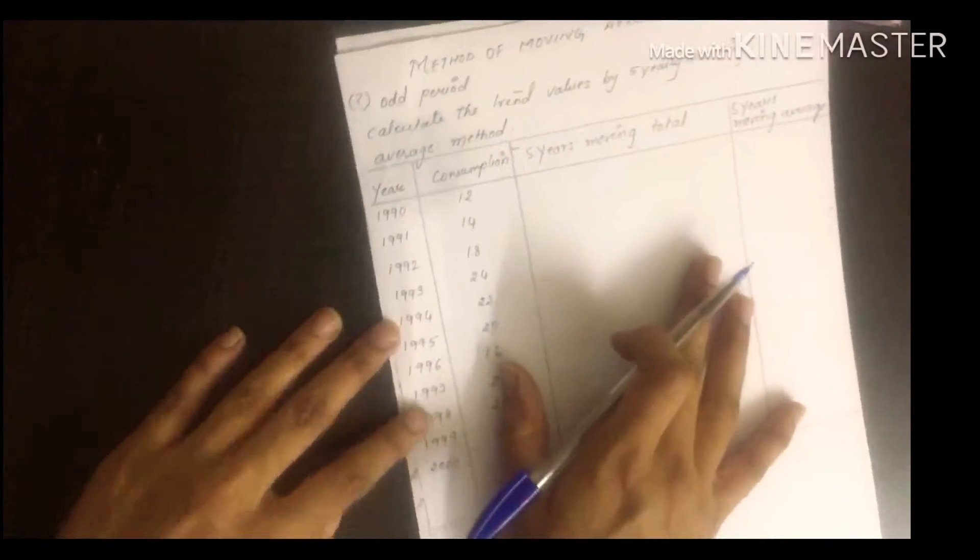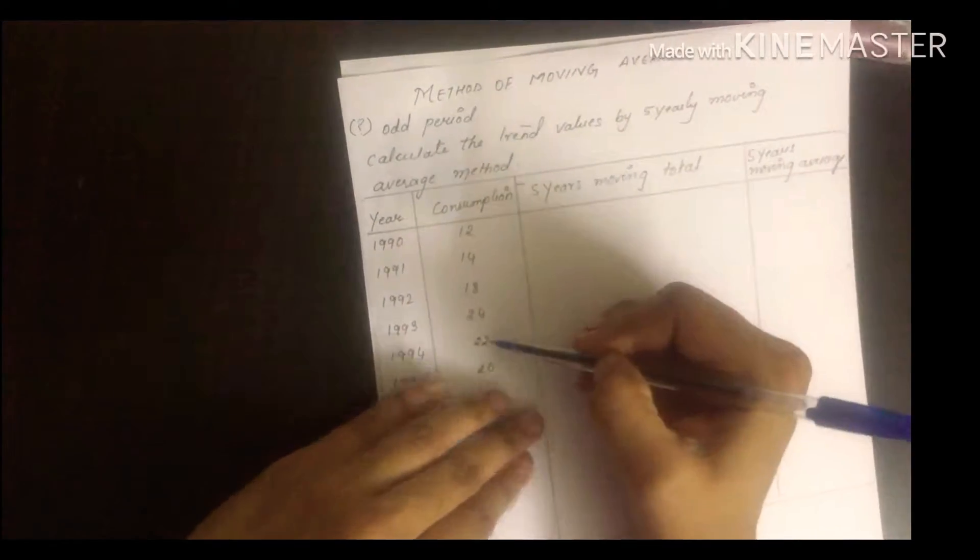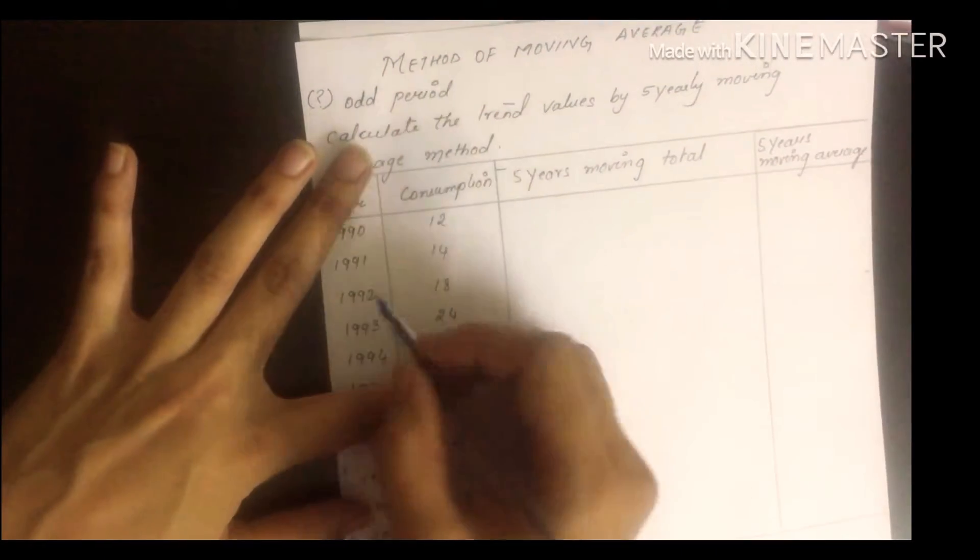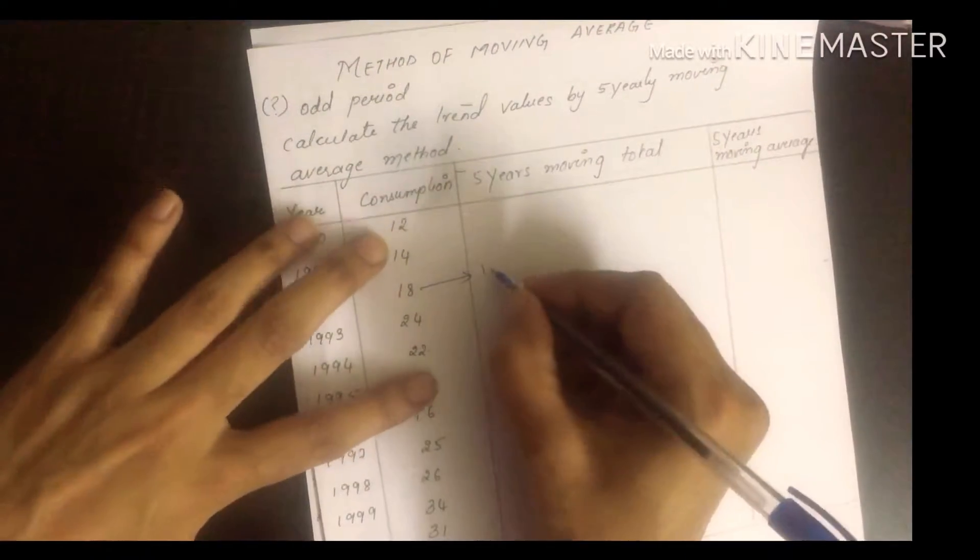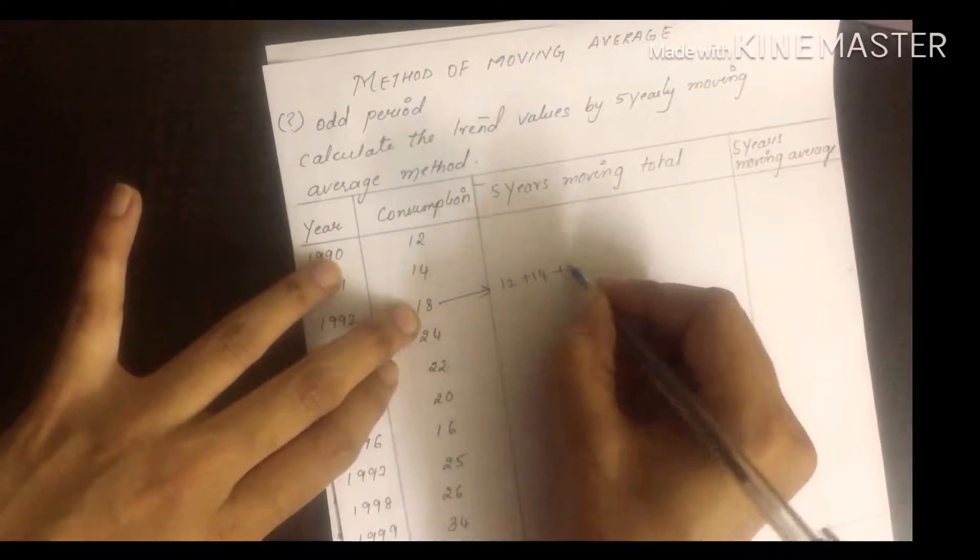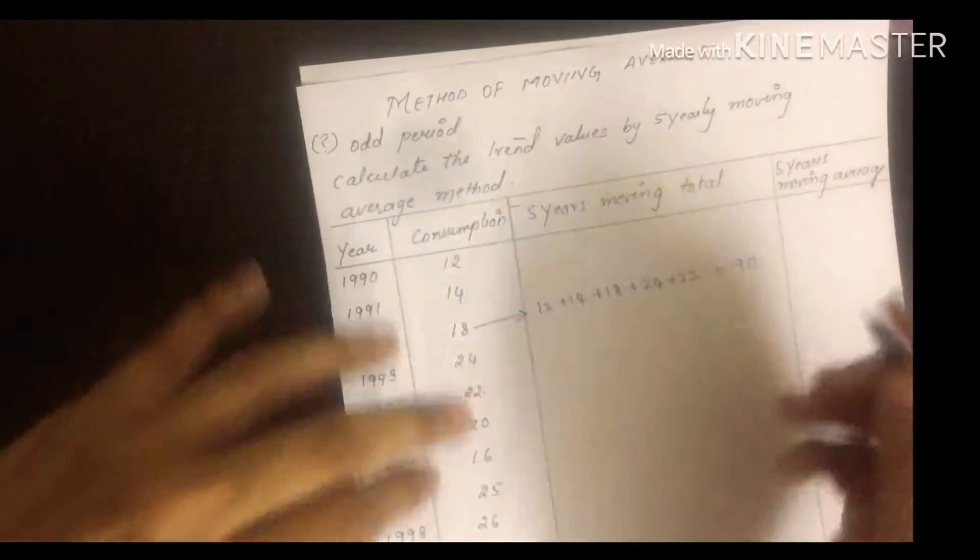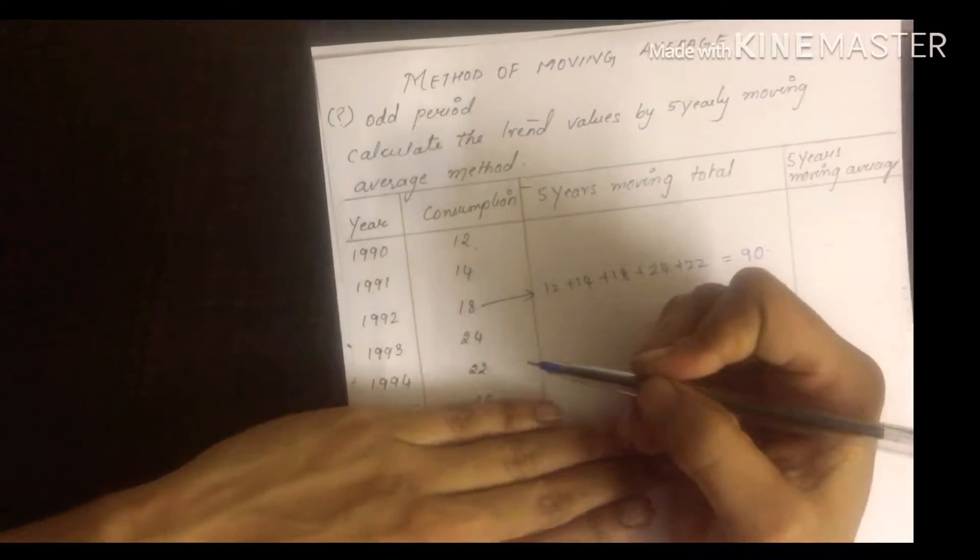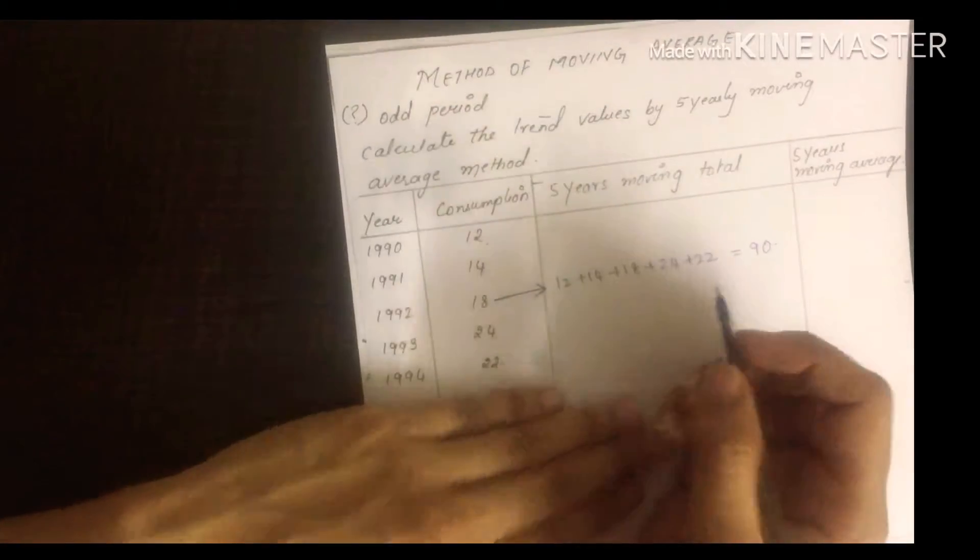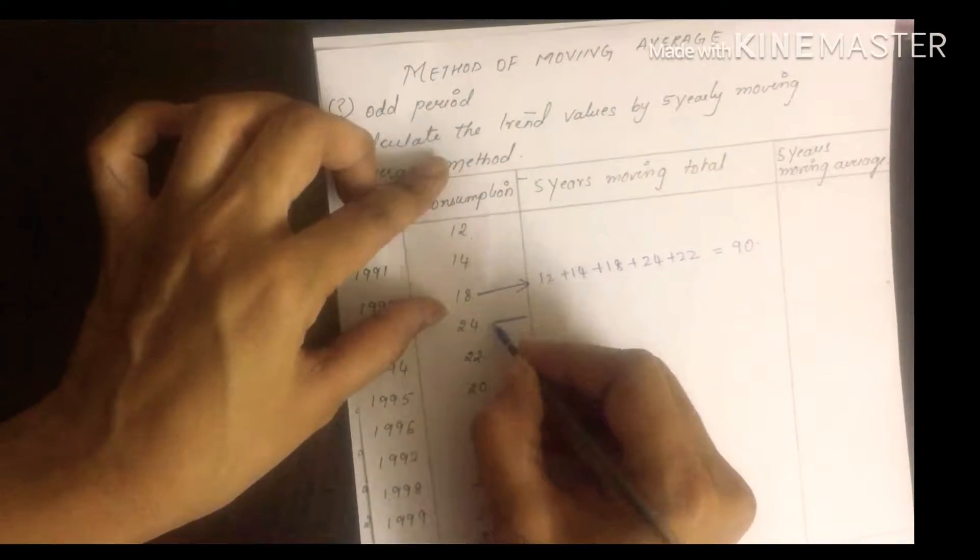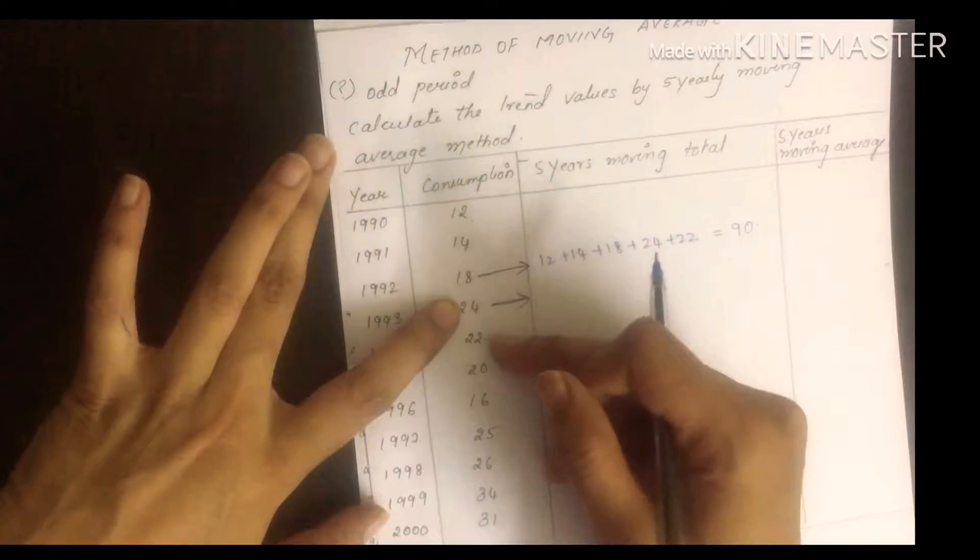Next we'll see 5 year moving average. Same as before, you first do moving total for 5 years. Take 1, 2, 3, 4, 5 - this one. Where do you write? In which year? The center of these 5 - the center is here. So 12 plus 14 plus 18 plus 24 plus 22 equals 90. For 5 years, take 1, 2, 3, 4, 5. Then take next 5 years. 5 years moving total.